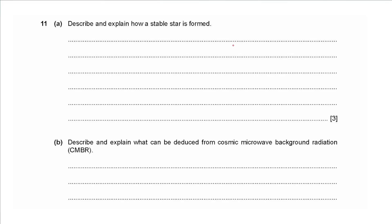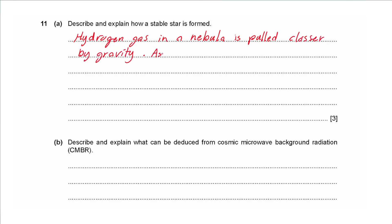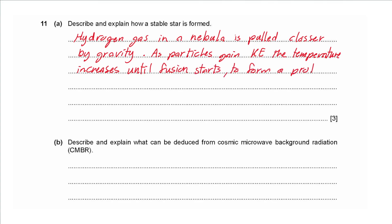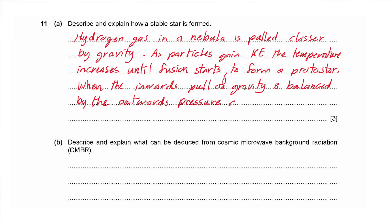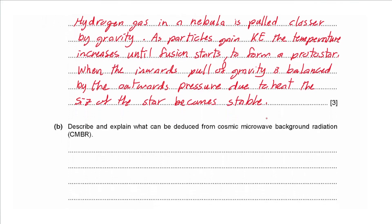Question 11a: describe and explain how a stable star is formed. Hydrogen gas in a nebula is pulled together by gravity; as particles gain kinetic energy, the temperature increases until fusion starts, forming a proto-star. Heat causes expansion while gravitational force causes contraction. When the inward pull of gravity is balanced by the outward pressure due to heat, the size of the star becomes stable — it is called a stable star.